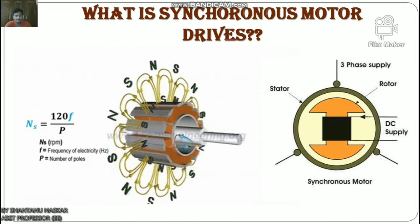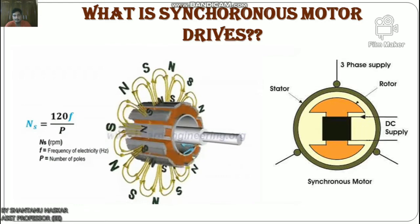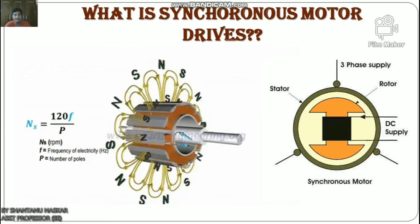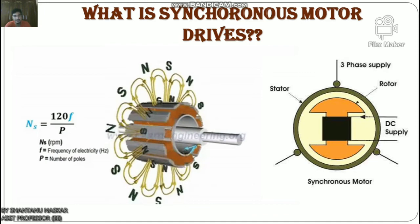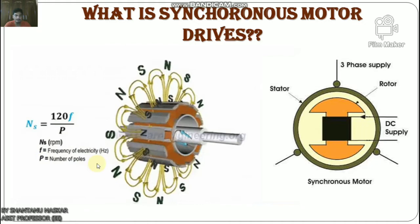If synchronous motors are designed to run only at rated synchronous speed, then what is the use of introducing drives to them? The answer is simple: synchronous motor drives make the starting, pull-in, and braking processes smooth and without any problem. Synchronous speed is given by Ns = 120f/P, where Ns is in RPM, f is frequency, and P is the number of poles.